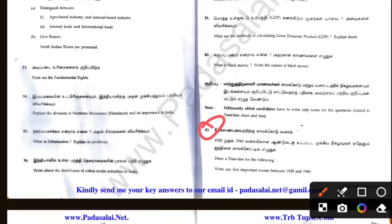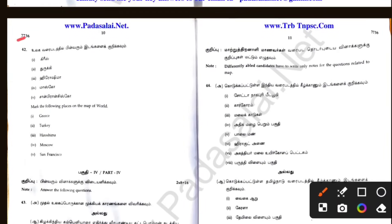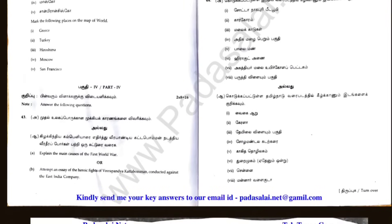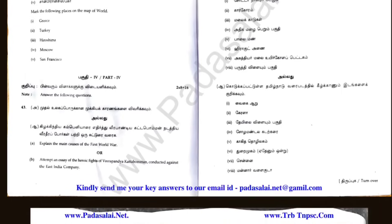If you have time and it is easy, you can find a simple map. The map includes: Creek, Turkey, Hiroshima, Moscow, and San Francisco. If you have the spelling, you can use the mark. Explain the main causes of the First World War.